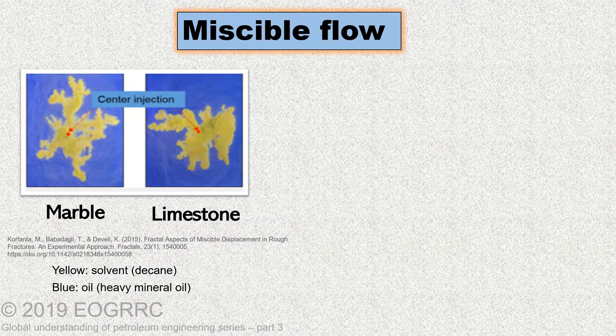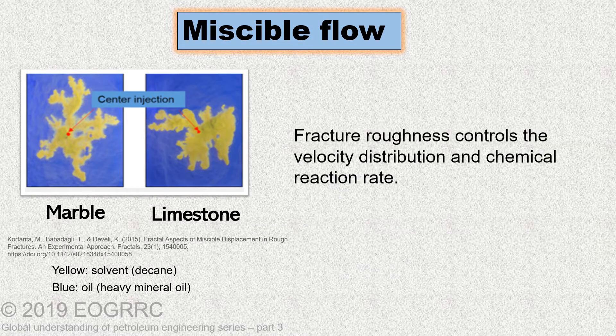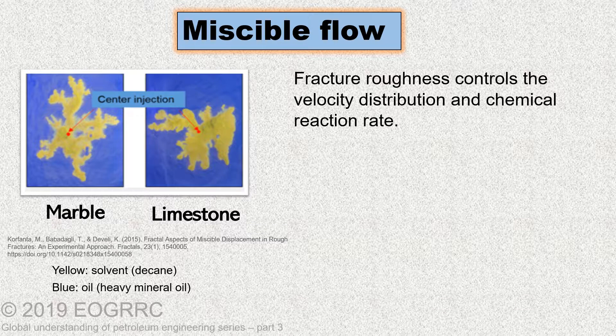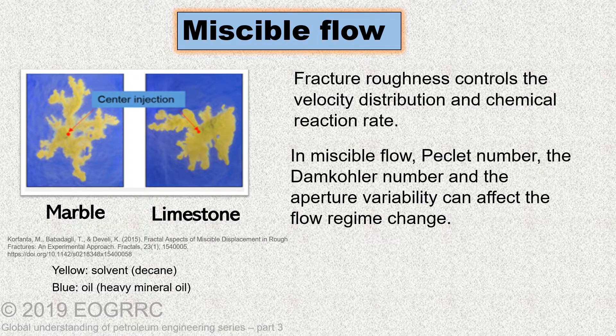Let's also look at miscible flow. We compare pink limestone and marble, keeping in mind that marble is smoother than limestone. It can be seen in the study by Carfanta et al. in 2015 that fracture roughness controls the velocity distribution and chemical reaction rate. In miscible flow, the Peclet number, Damköhler number, and aperture variation can easily affect the flow regime change.